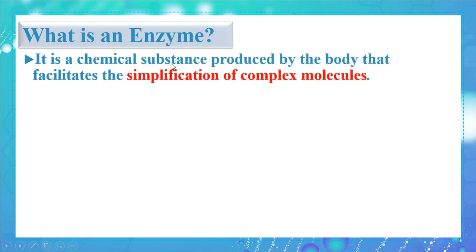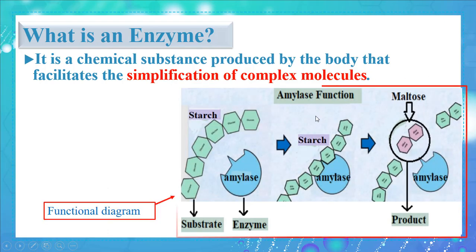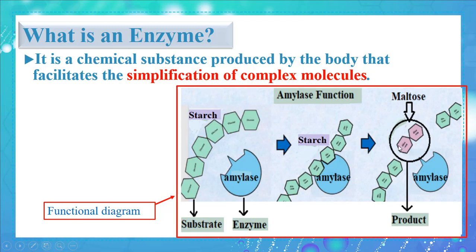An enzyme is a chemical substance produced by the body that facilitates the simplification of complex molecules. In this functional diagram, the enzyme — amylase — fits into the substrate, which is the cooked starch, in order to break it down into maltose, which is the product.